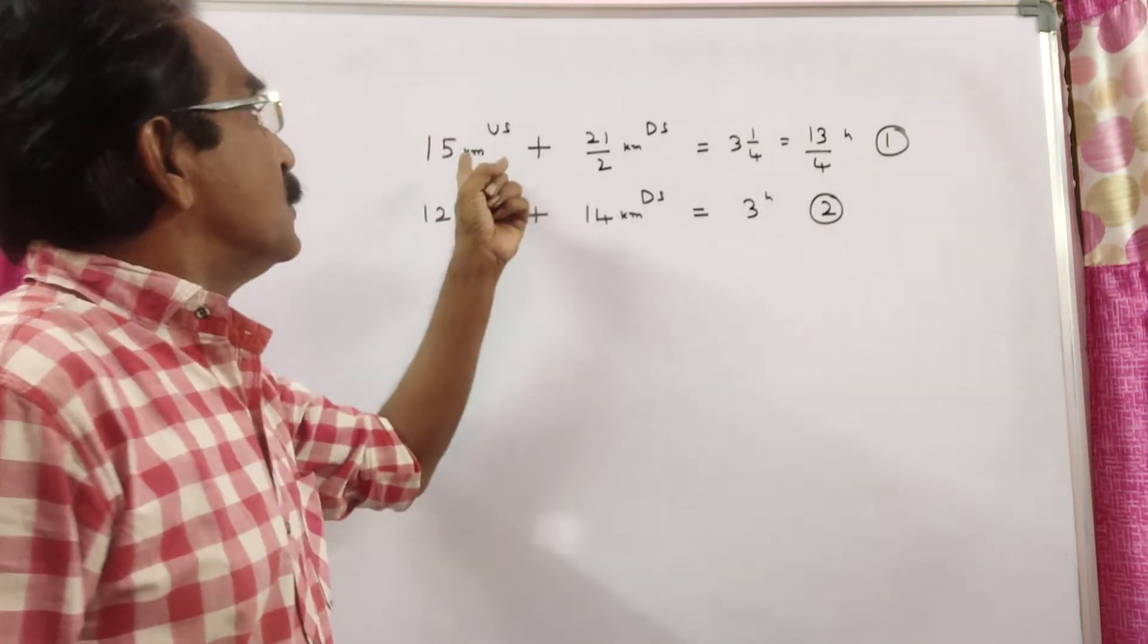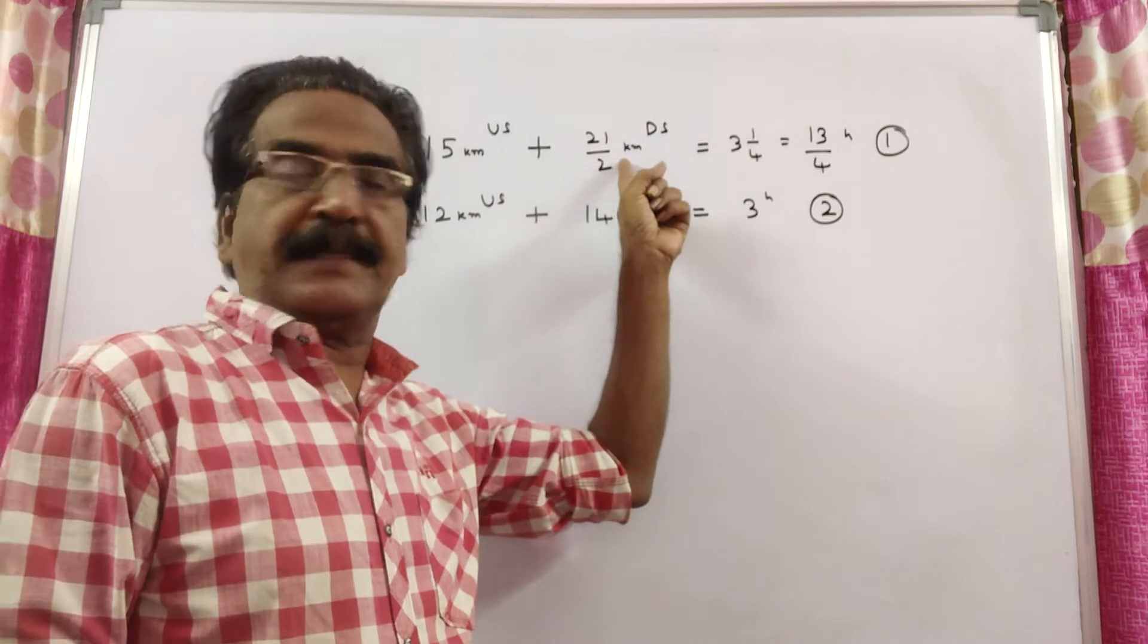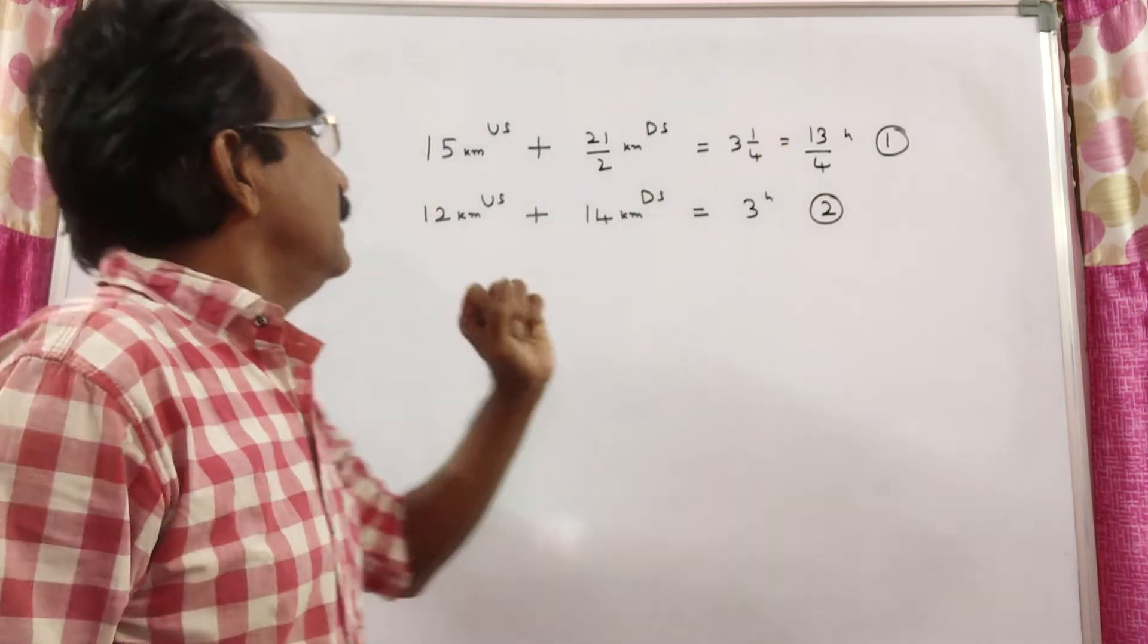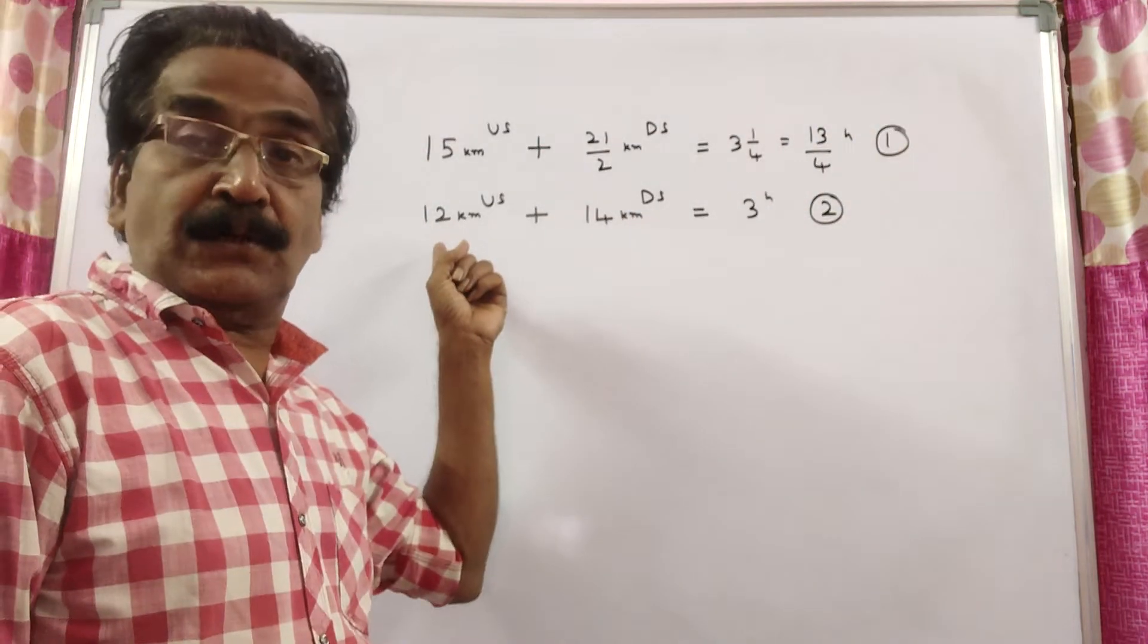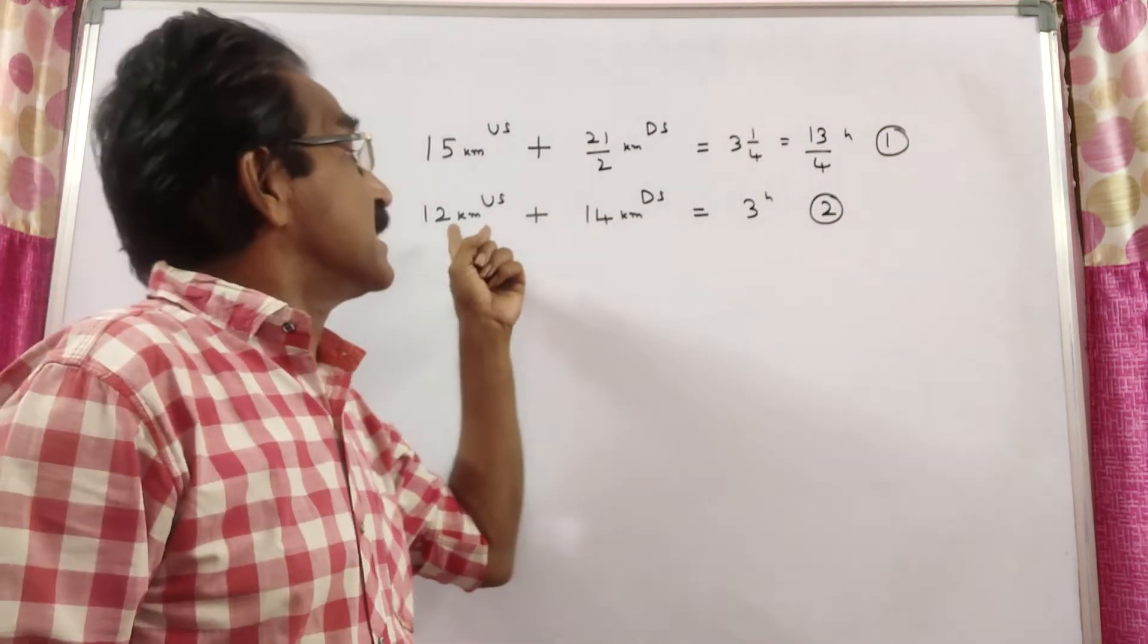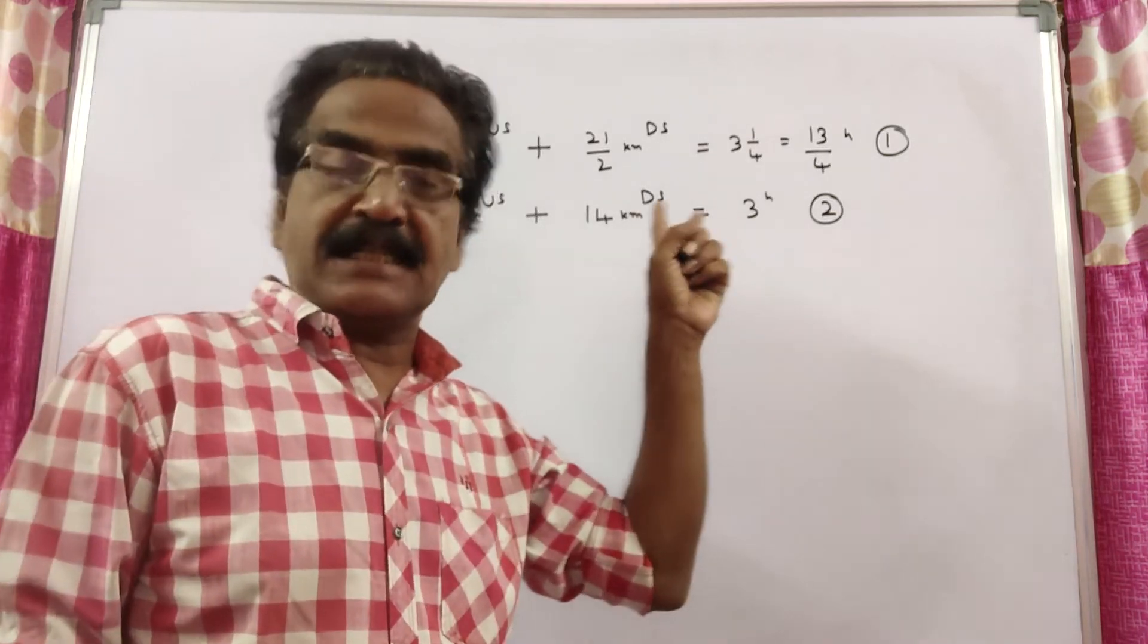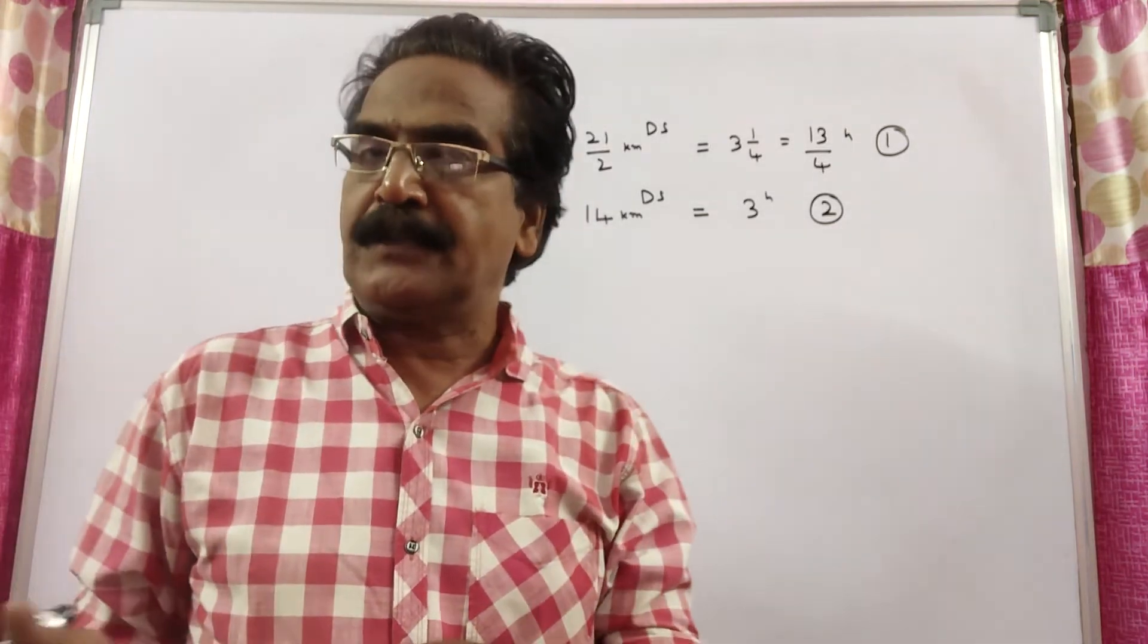A boat goes 15 kilometers upstream and 10 and a half kilometers downstream in 3 hours 15 minutes. That is equation 1. The same boat goes 12 kilometers upstream and 14 kilometers downstream in 3 hours. What are the respective speeds of boat and stream?